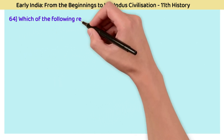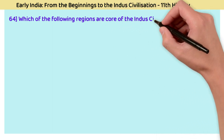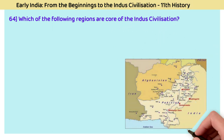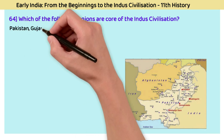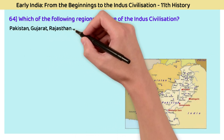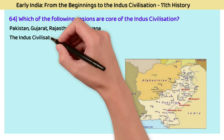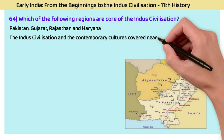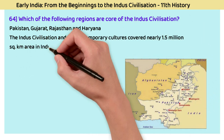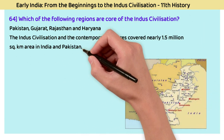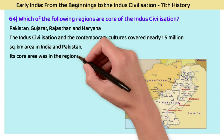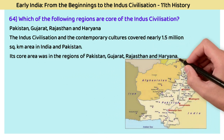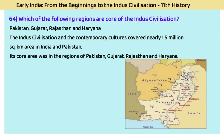Question 64: Which regions are the core of the Indus civilization? The answer is Pakistan, Gujarat, Rajasthan, and Haryana. The Indus civilization and contemporary cultures covered nearly 1.5 million square kilometers in India and Pakistan. The core area was in the regions of Pakistan, Gujarat, Rajasthan, and Haryana.